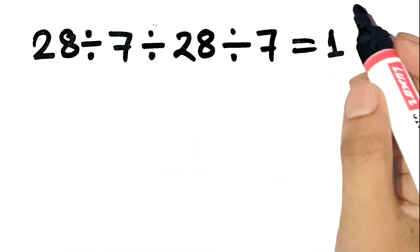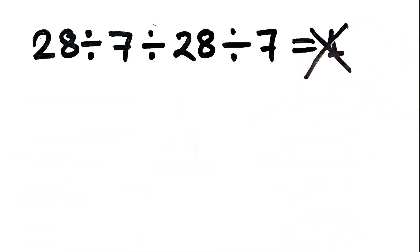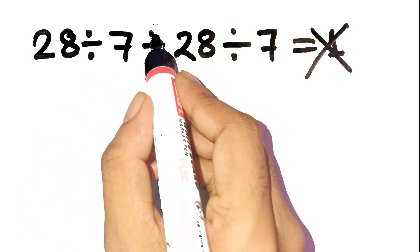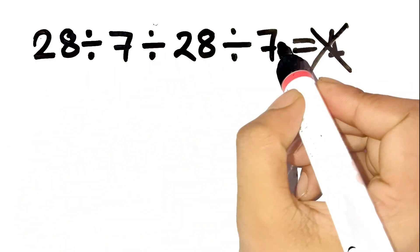Most people say 1, but that's completely wrong. Here's why. All right, so here's the problem: 28 divided by 7 divided by 28 divided by 7.